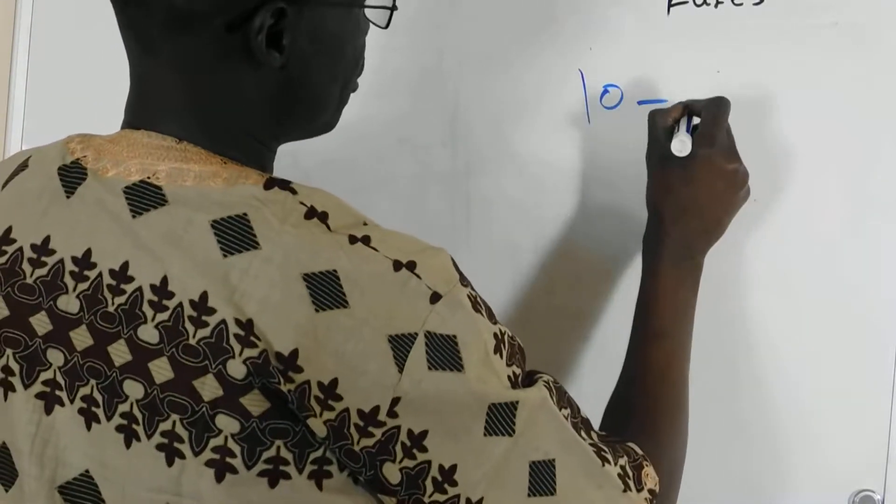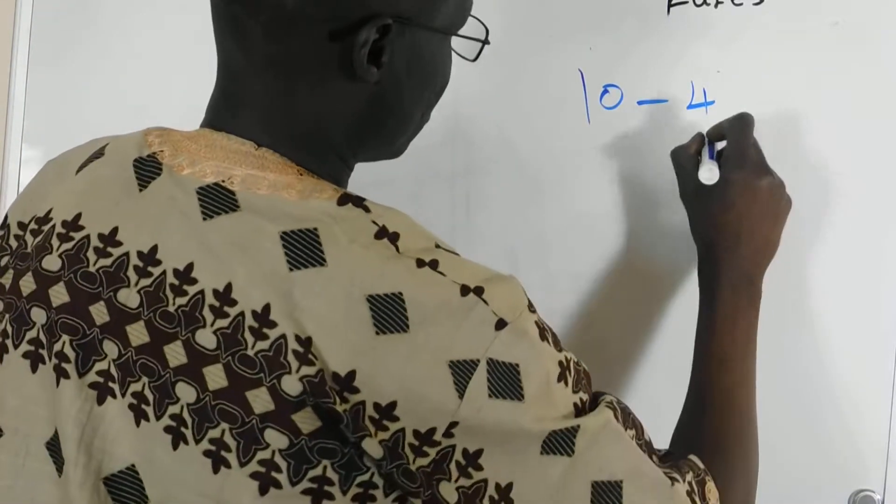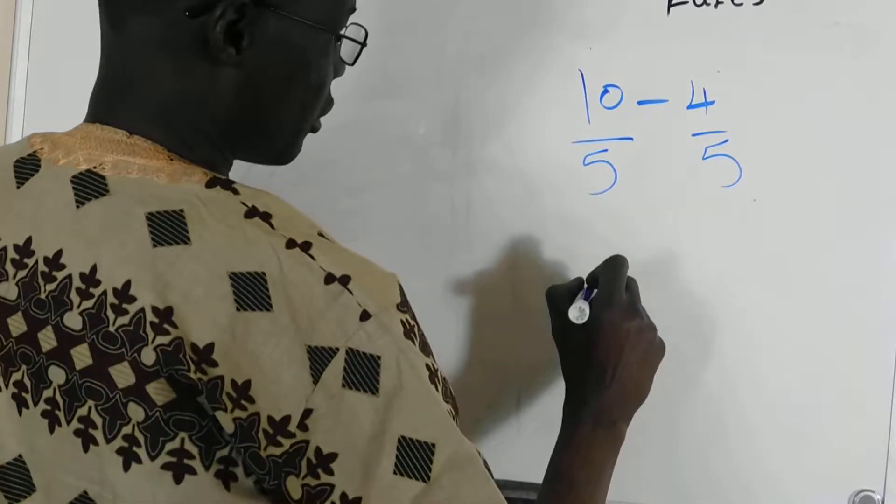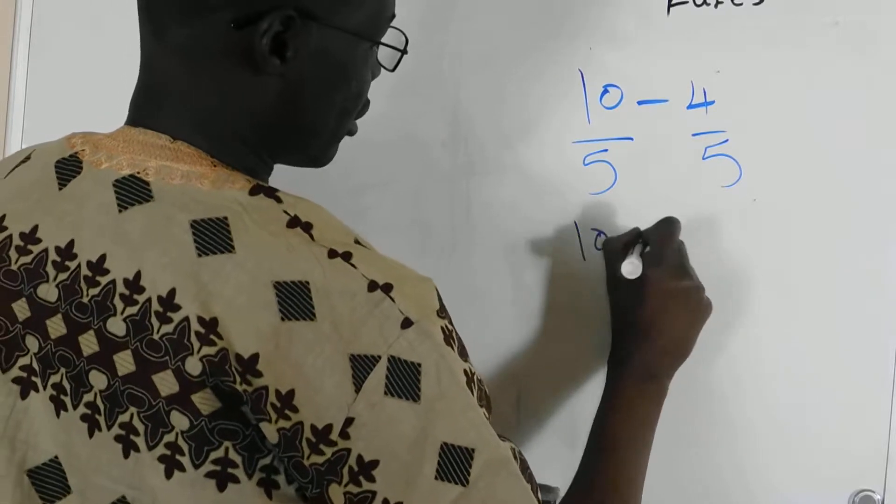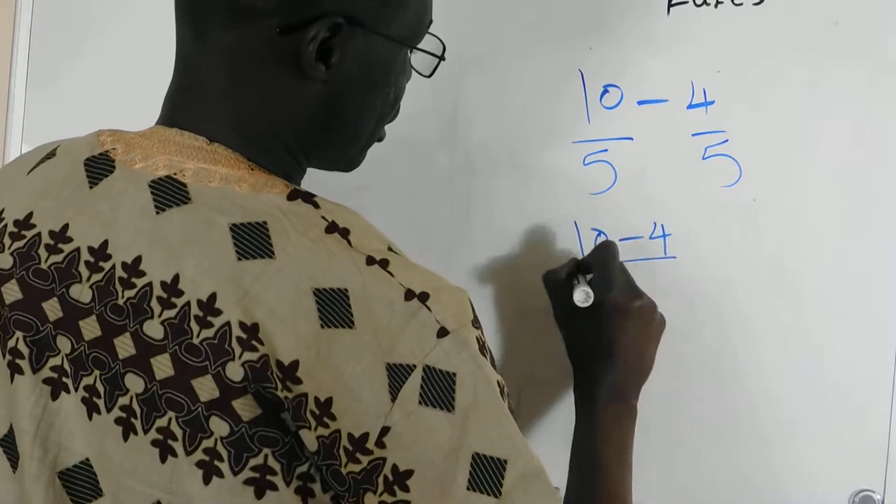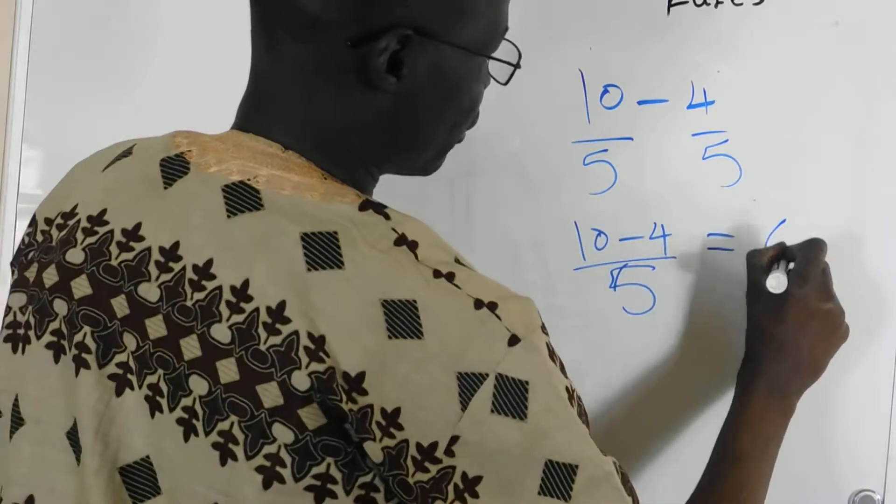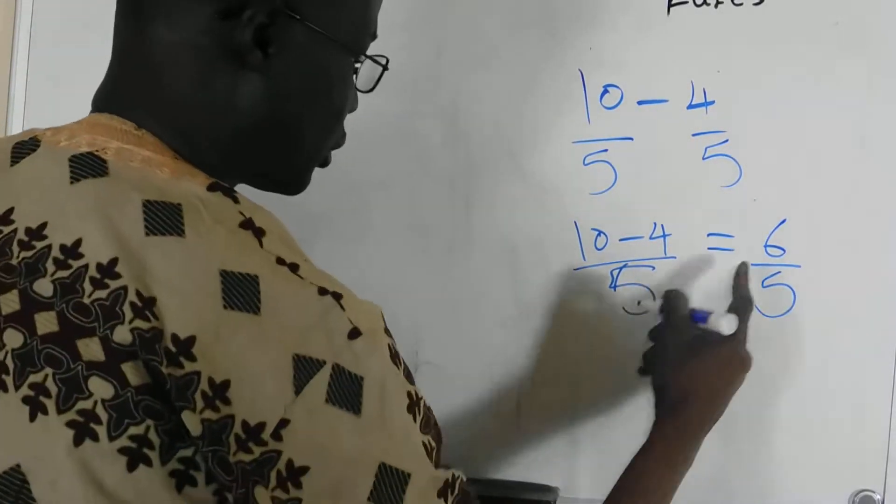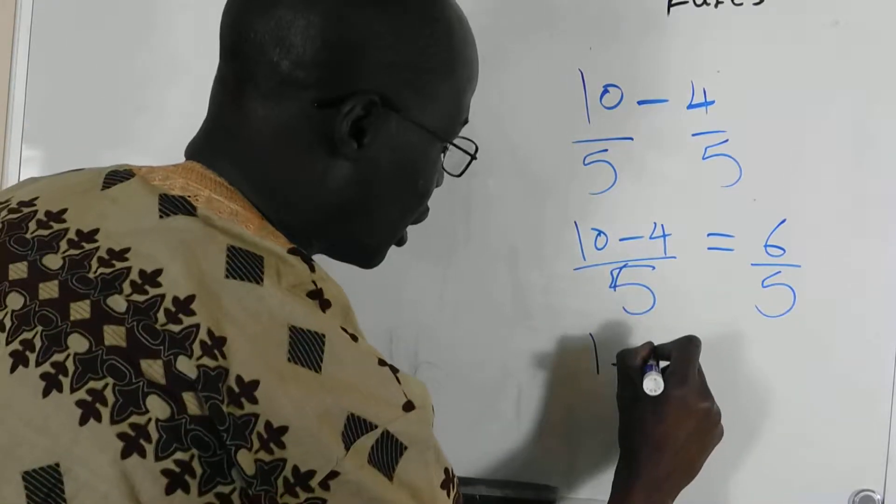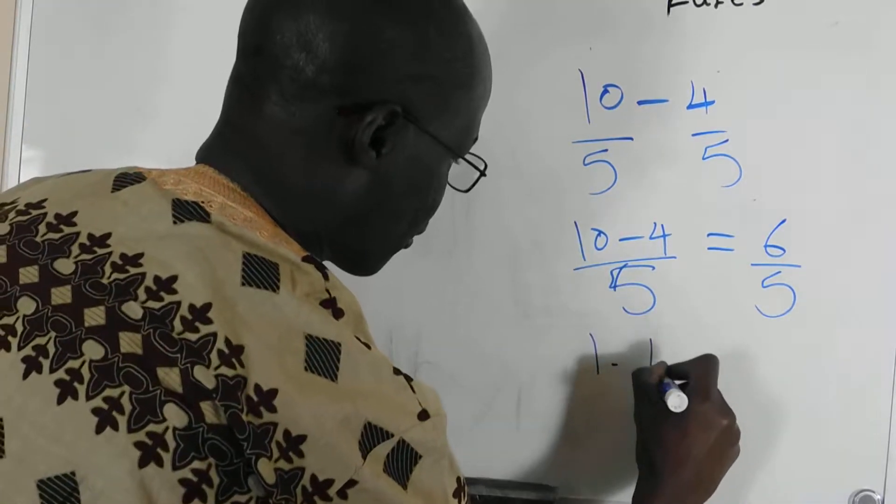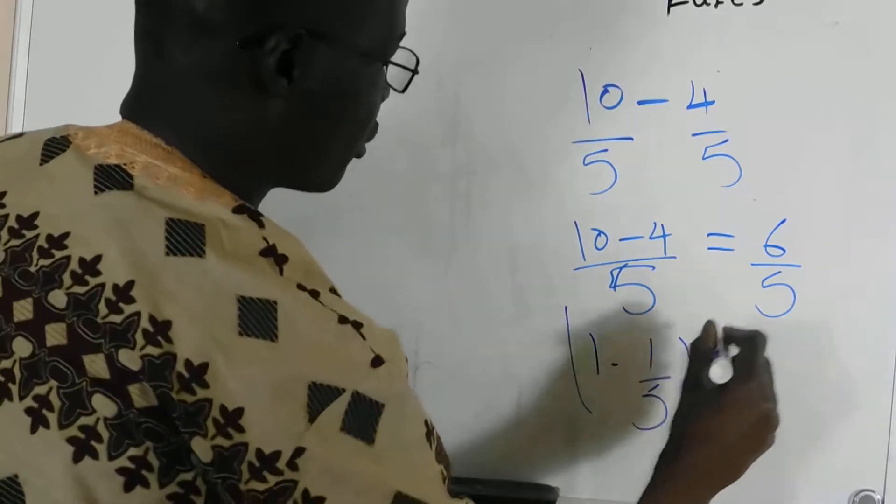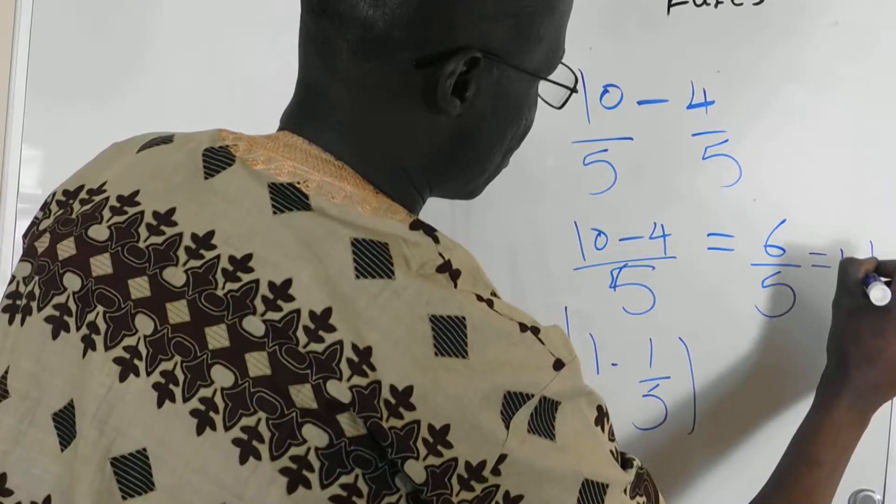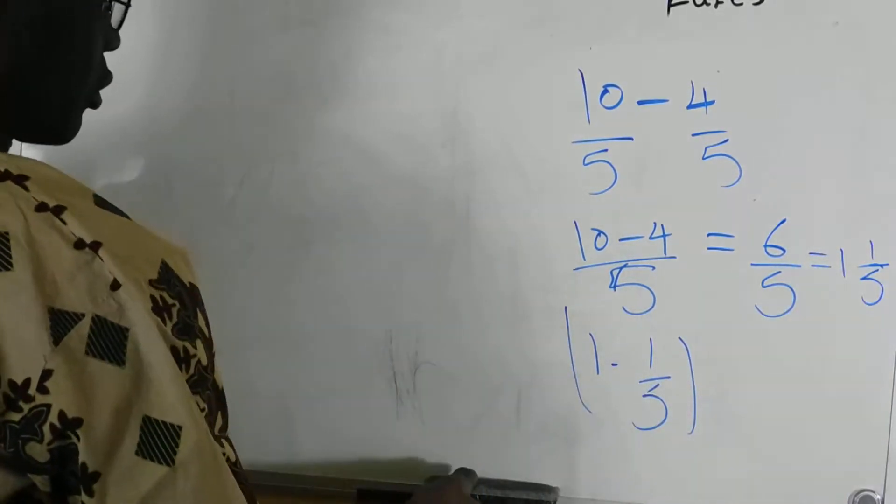Yep, okay. So, 10 minus 4 over 5, you should get 6 over 5, and also, you can divide this one, it should be 1 over 5. That's what you should get. So, which is 1, and 1 over 5. That's what you should get.